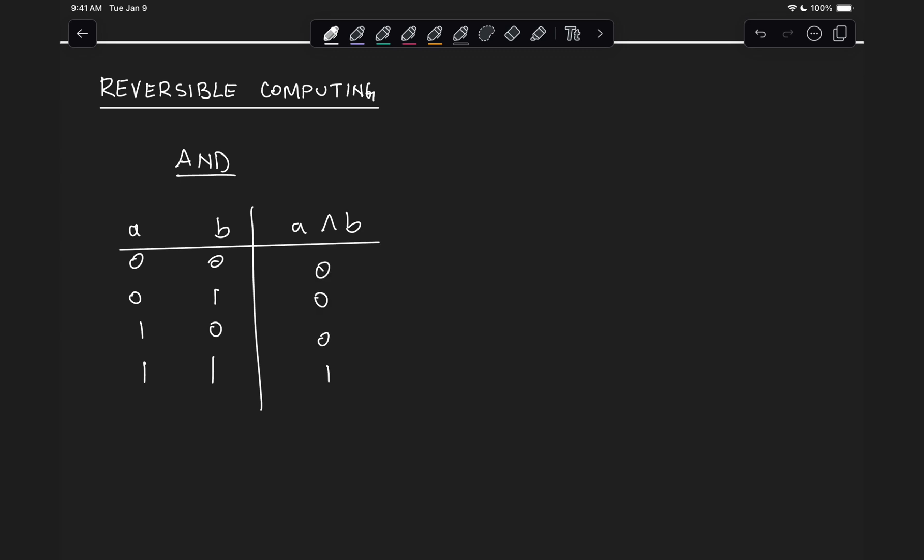The AND operation is equal to one only when both A and B are one. So looking at this truth table, what if we wanted to figure out what A and B are based just on the output? If we were to get a one at the output, we can guarantee that both inputs A and B are equal to one. But if our output is zero, then there is absolutely nothing we can say about A and B. This is the concept of irreversibility.